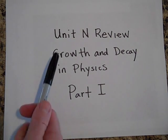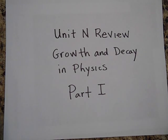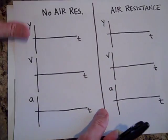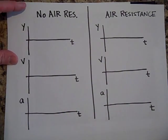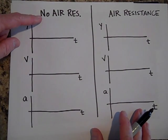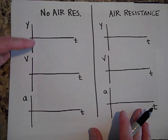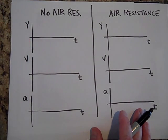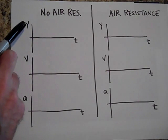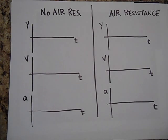Okay, here we go with a review of unit on growth and decay in physics. We'll start off with air resistance. Remember to pause and try these as I ask them. Let's first graph all the graphs of an object in free fall when there's no air resistance. Let's call the downward direction negative and up positive. See if you can graph the position versus time, the velocity versus time, and the acceleration versus time.